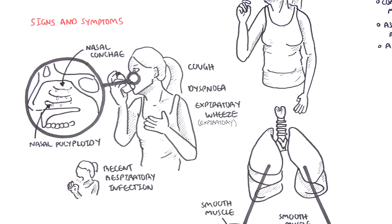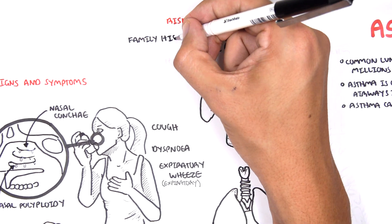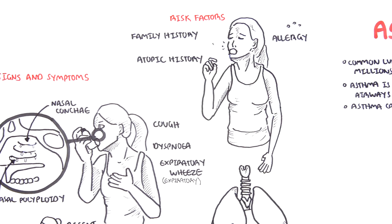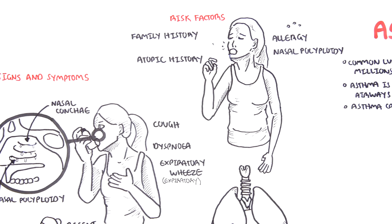The risk factors for asthma include having a family history, atopic history, an allergy, having nasal polyps, having GERD, and obesity.